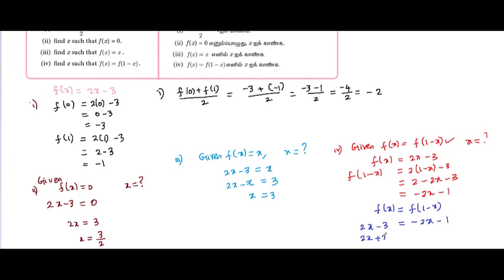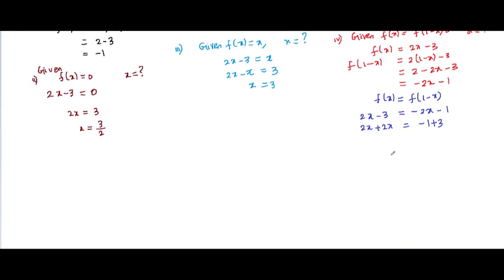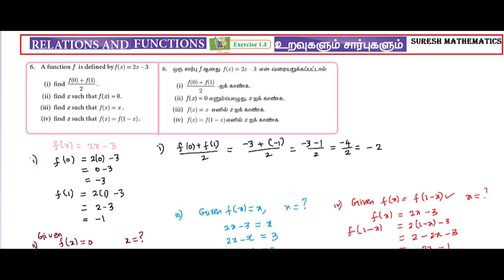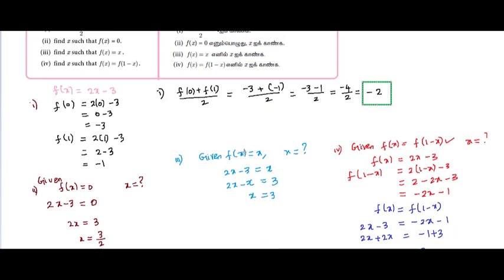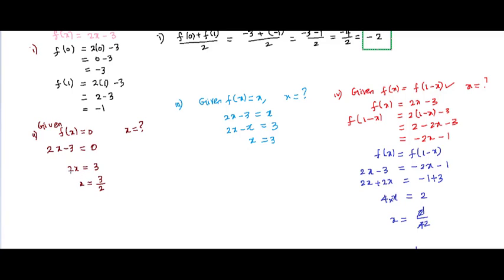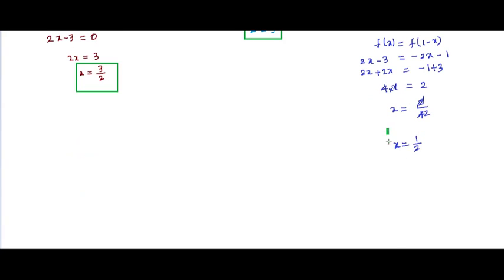Set 2x minus 3 equal to minus 2x minus 1. Bring 2x to the other side: 2x plus 2x gives 4x, and minus 1 plus 3 gives 2. So 4x equals 2, and x equals 2 divided by 4, which is x equal to 1 by 2. Therefore, for f of x equal to f of 1 minus x, x equals 1 by 2. Thank you.